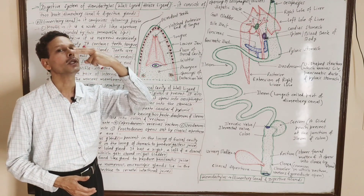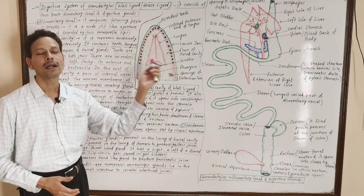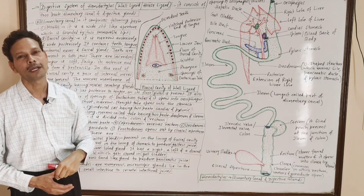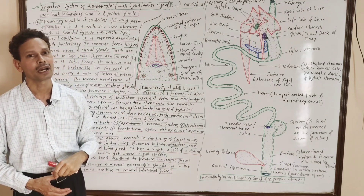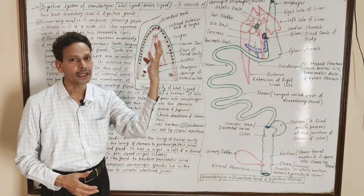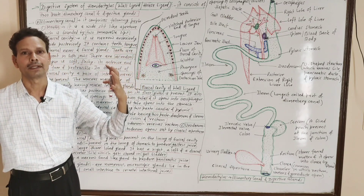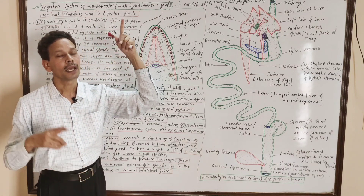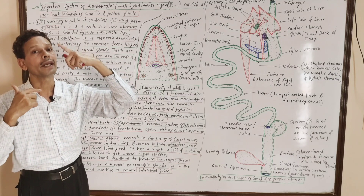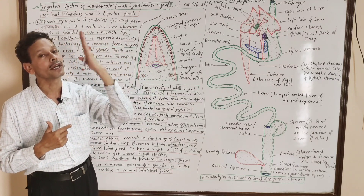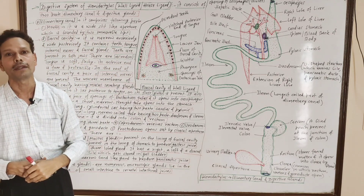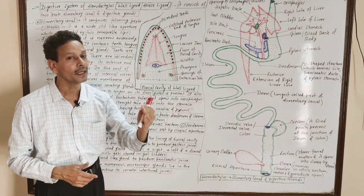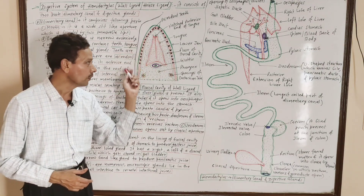The mouth leads into a buccal cavity. This diagram shows only the lower jaw and the floor of the buccal cavity. The buccal cavity is the second part of the alimentary canal. It is narrow anteriorly and wider posteriorly. Its roof is the palate, and that palate possesses a pair of openings — the internal nares — meaning the external nares open inside the buccal cavity through the palate.